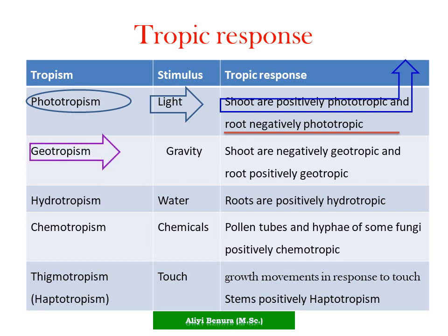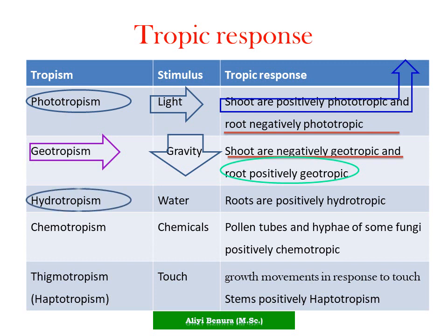Geotropism is the second type of tropism, where gravity is the stimulus. The shoot is negatively geotropic, whereas the root is positively geotropic.